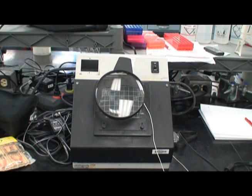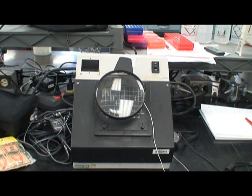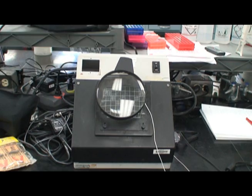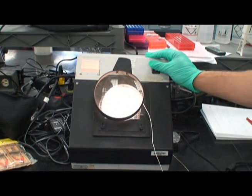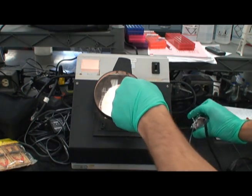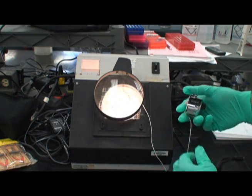Following incubation, a light box can be used to count the colonies. By looking through the magnifying glass and using the counter to keep track, the number of colonies on each plate can be recorded.